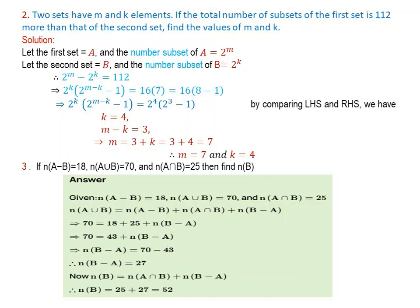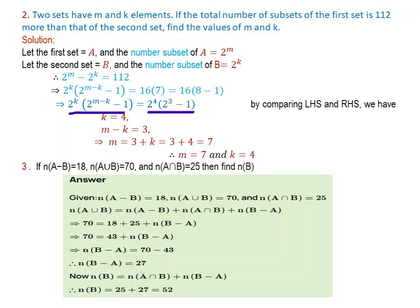So 2 to the power of K times (2 to the power of M minus K minus 1) equals 2 to the power of 4 times (2 to the power of 3 minus 1), since 16 equals 2 to the power of 4 and 8 equals 2 to the power of 3. By comparing both sides, K equals 4 and M minus K equals 3. Since K is 4, M equals 3 plus 4, which is 7. Therefore, M equals 7 and K equals 4.